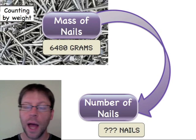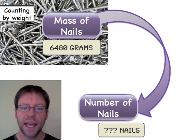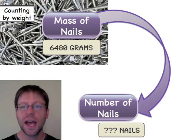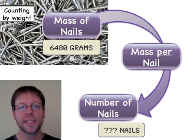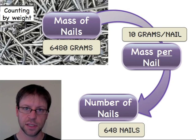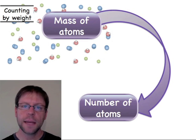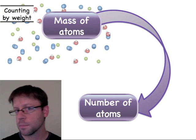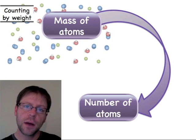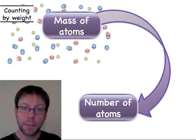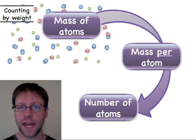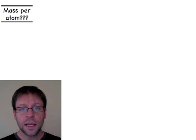I can do this with anything. Let's look at some nails: I go to the hardware store, put some nails on the scale, and get 6,480 grams. If I want to know the number of nails I just purchased, I need to know that conversion factor — the mass per nail — and then I can easily calculate the number of nails. The same thing is true in chemistry: if I have a bunch of atoms and want to know how many I have, I can weigh them and figure out the mass on a scale in grams.